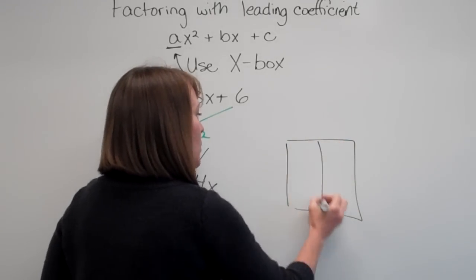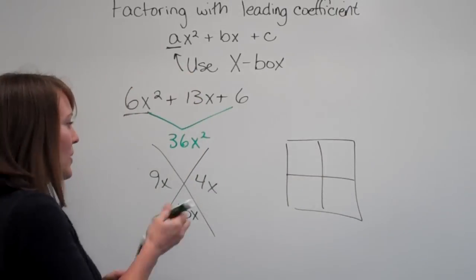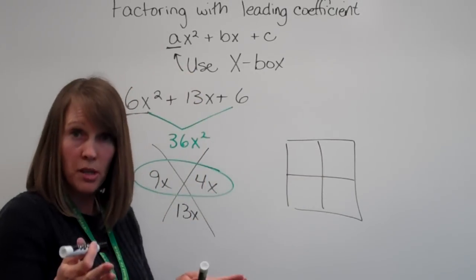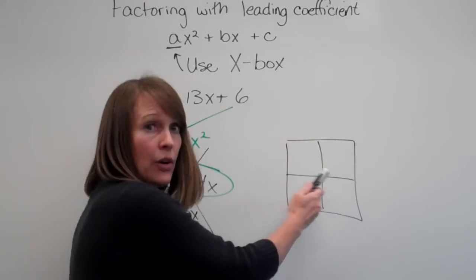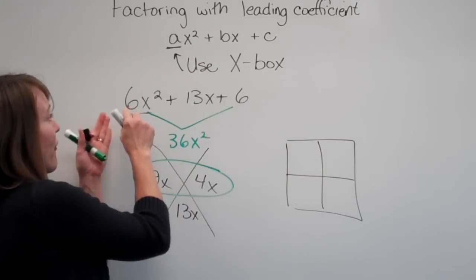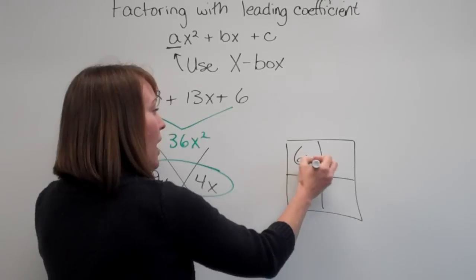Alright then. The only reason why we use this x is so that we can get our new factors. Now we're going to go backwards, use the box, fill in your area first. Your area is what we started with. So first term goes in the first box.